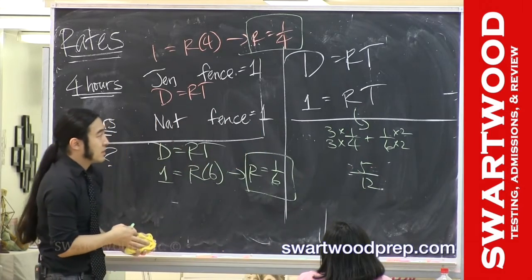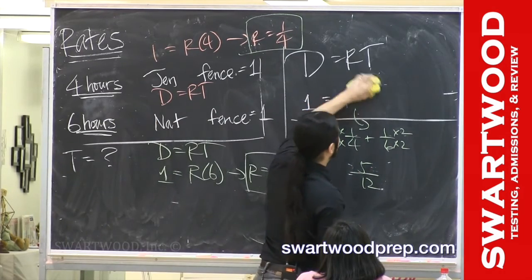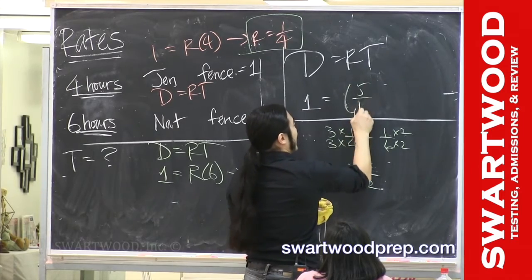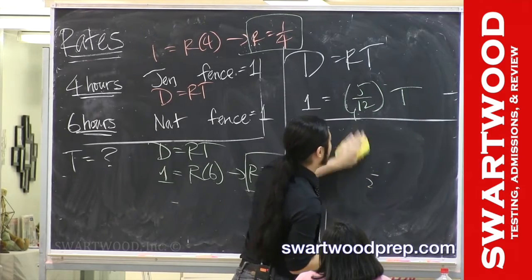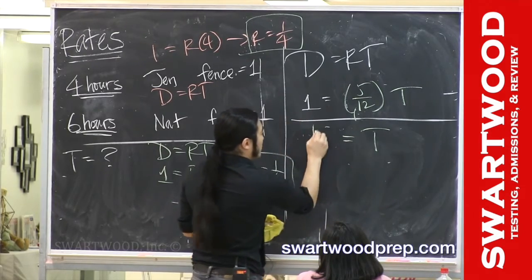So maybe in this equation, the rate is 5 over 12, and then the time is gonna be really pretty. So the time is gonna be 12 over 5.